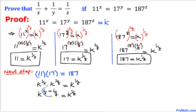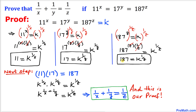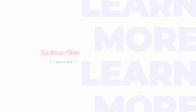Since the base k is the same on both sides, we can equate the exponents, giving us 1 over x plus 1 over y equals 1 over z. This completes the proof. Thanks for watching, and please don't forget to subscribe to my channel for more exciting videos.